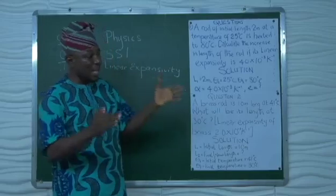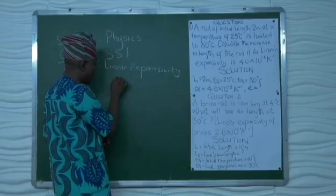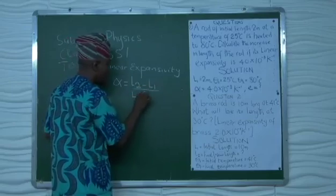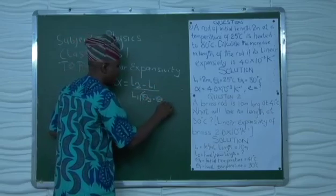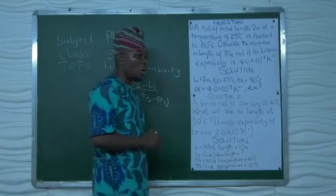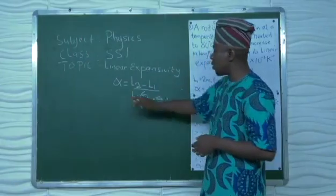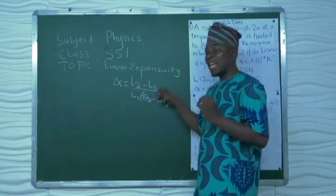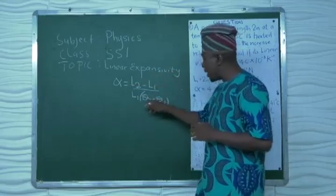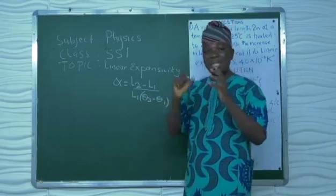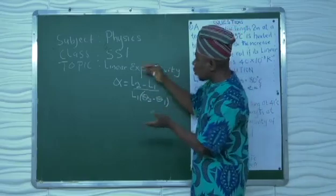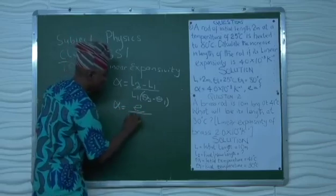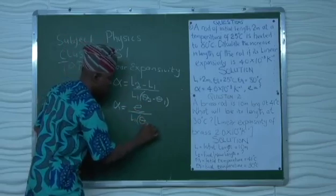Symbolically or mathematically, linear expansivity can be written as: L2 minus L1, all over L1 open bracket theta 2 minus theta 1. This symbol stands for linear expansivity. L2 stands for the new or final length. L1 stands for the original length. Theta 2 stands for the final temperature. Theta 1 stands for the initial temperature. We can also write linear expansivity as E all over L1 open bracket theta 2 minus theta 1.